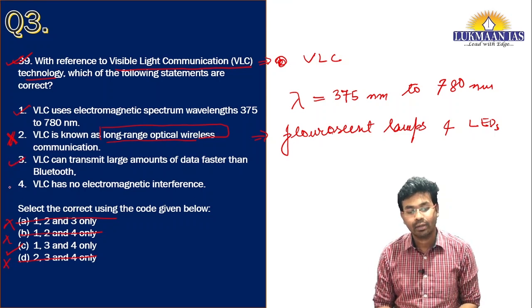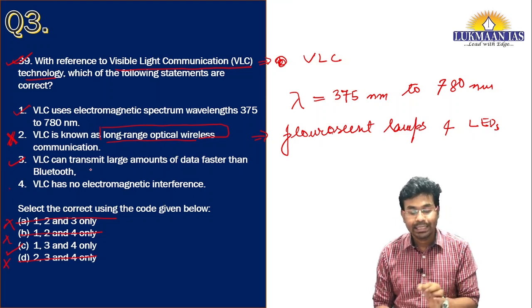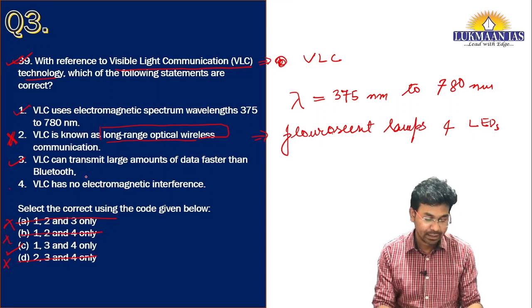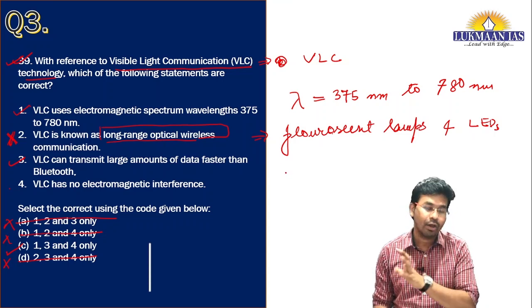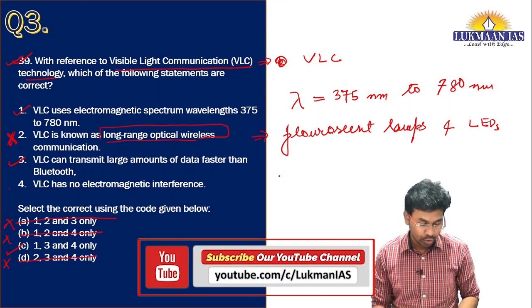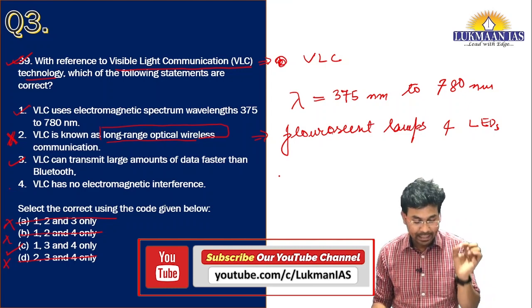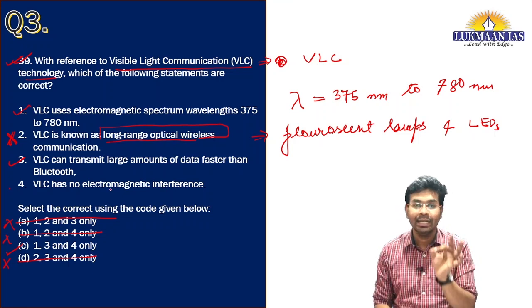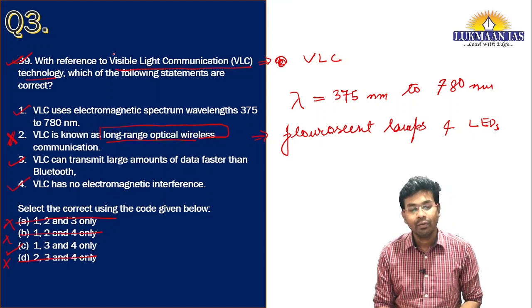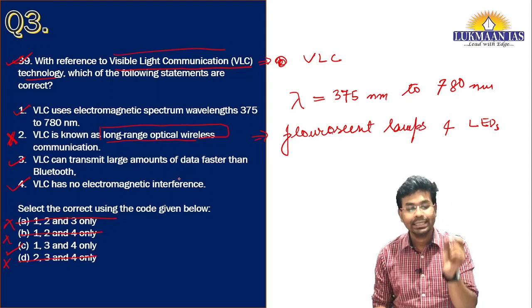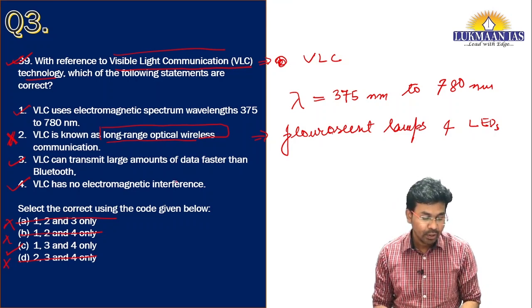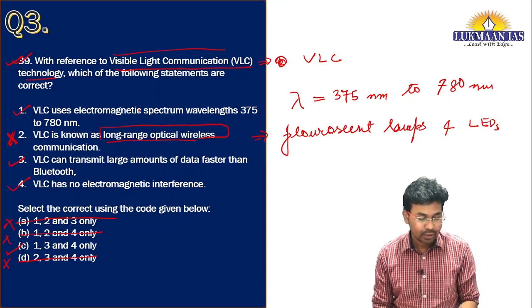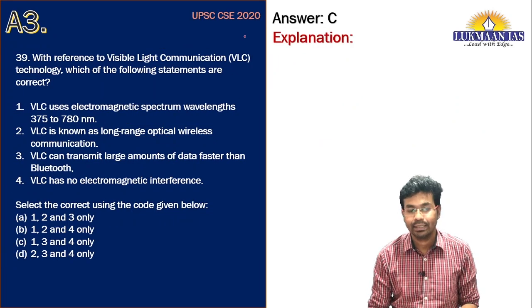Statement three says VLC can transmit large amounts of data faster than Bluetooth — yes, this is a property of VLC. The speed of data transfer in VLC is much higher compared to Bluetooth. Additionally, VLC uses no electromagnetic interference, it is a low-cost technology, and it has a high data rate. These are the key properties of visible light communication technology. The correct answer for this question is option C.